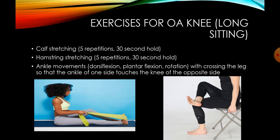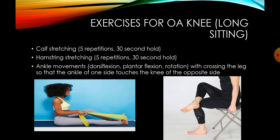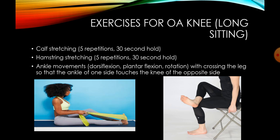Exercises for OA knee in long sitting position. As you can see in the picture on the left side, patient will be in long sitting position and can do calf stretching. Stretch the calf muscles, hold it for 30 seconds and then release it. It can be done for a total of 5 repetitions. Same way, hamstring stretching can be performed.